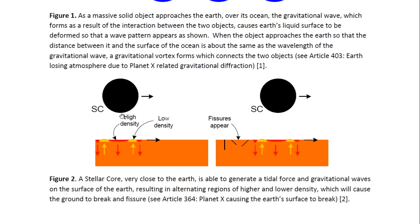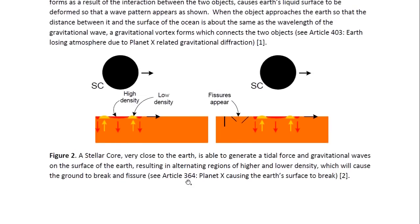If the object does not move over the ocean, so there is no water to form that tidal bulge and therefore the gravitational vortex connection, its gravitational wave still affects the ground below the stellar core and causes a region of high density, a region of low density, and these will form rings on the surface of the Earth. As the object moves, this wave pattern moves across the surface of the Earth, causing the ground to expand and contract, which causes it to break and fissure. For more details, you may look at Article 364 entitled, Planet X Causing the Earth's Surface to Break.